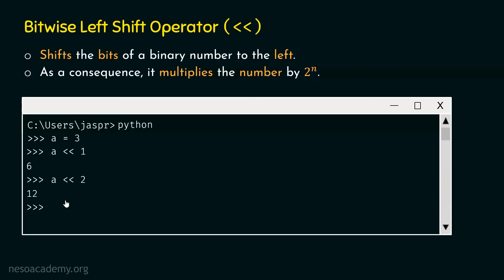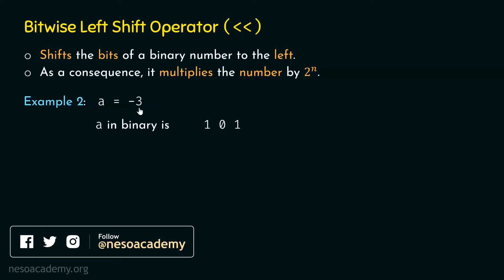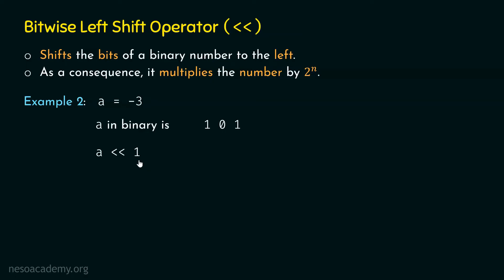Let's consider one more example to reinforce the concept, this time using a negative number. We take a equal to minus 3. Minus 3 in binary is 101. The sign bit has a place value of minus 2 to the power 2, which is minus 4, and the rightmost bit has place value 1. Minus 4 plus 1 equals minus 3, so this binary number correctly represents the decimal value minus 3. Now let's shift these bits left once, performing a left shift 1, giving us 1010.